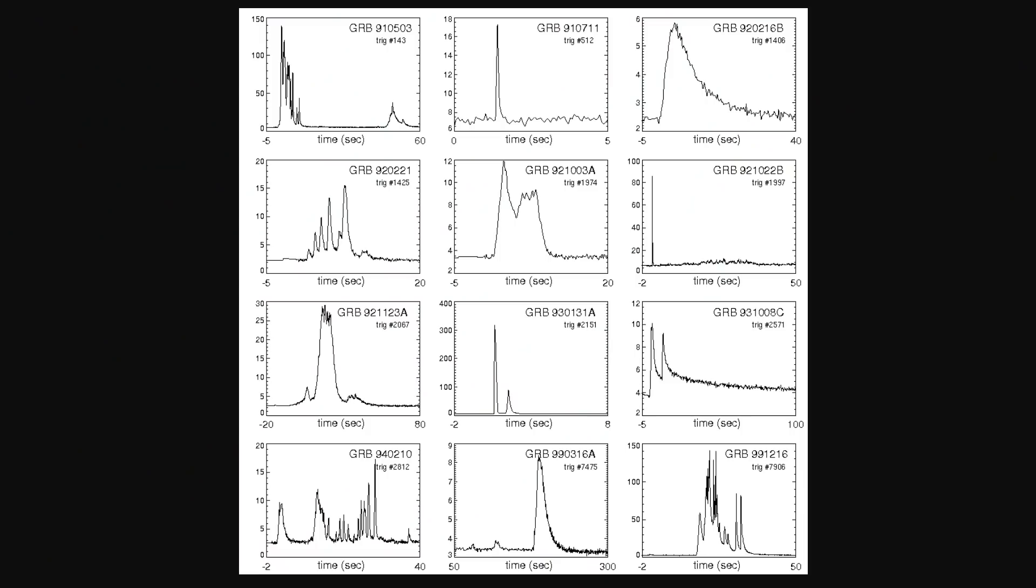But following the explosion what's left behind is essentially a black hole. And this model of the collapsar, of the star collapsing on itself, was originally the only explanation for the existence of gamma-ray bursts. But some of the gamma-ray bursts were slightly different. Something did not really add up. As a matter of fact this image right here sort of shows you how a lot of these gamma-ray bursts do have very different properties.